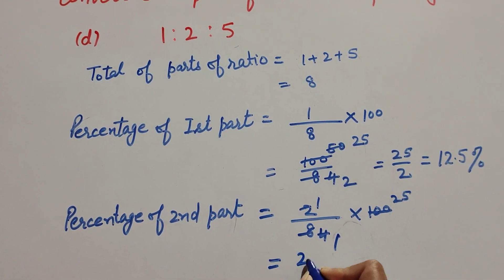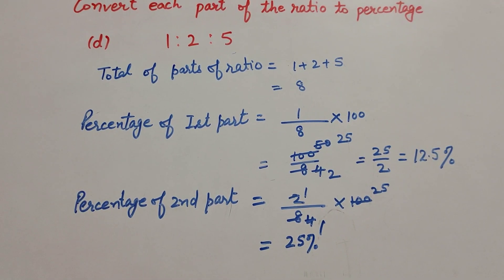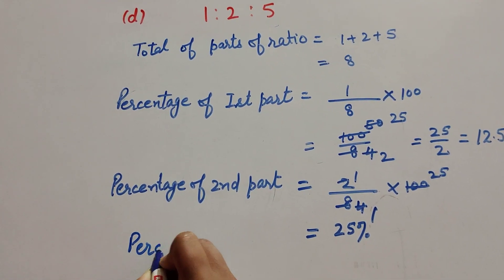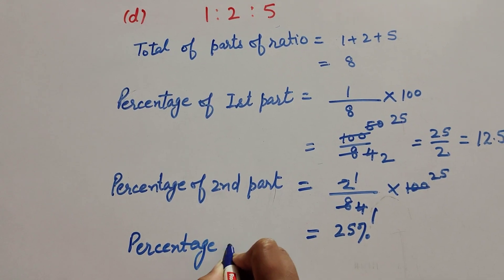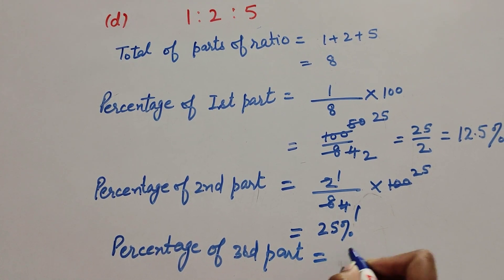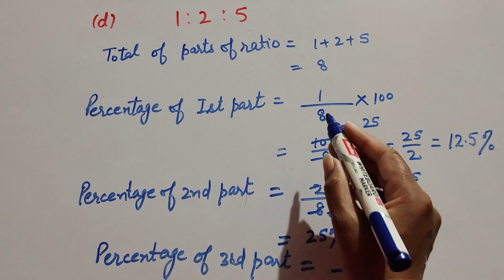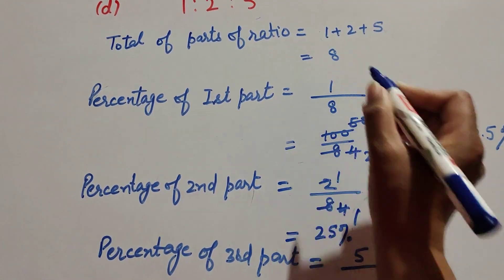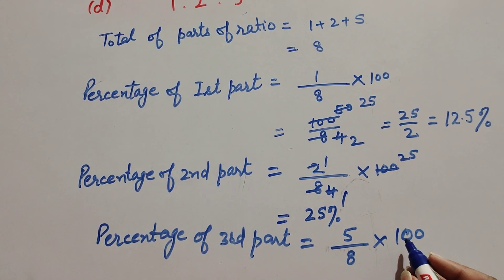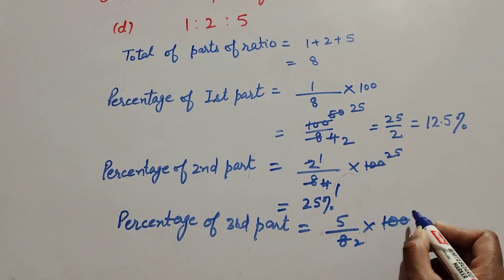So the percentage of the second part is equal to twenty five percent. Now we find the percentage of the third part. Percentage of third part is equal to the third part — which is five — over the total of all the ratios, which is eight, multiplied by one hundred. Eight and one hundred are both divisible by four, so we cancel them: four twos are eight, twenty five fours are one hundred.